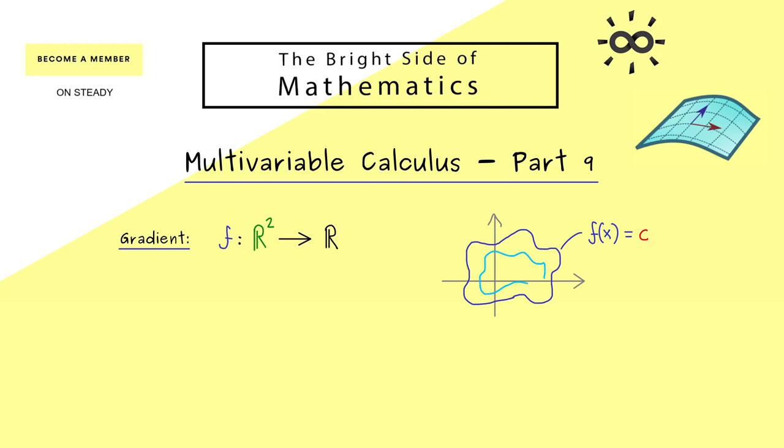So for example we could just say f(x) is equal to a constant c. Hence for another constant we would also have another contour line here. So this is the picture you already know for the visualization of the function f by using contour lines.